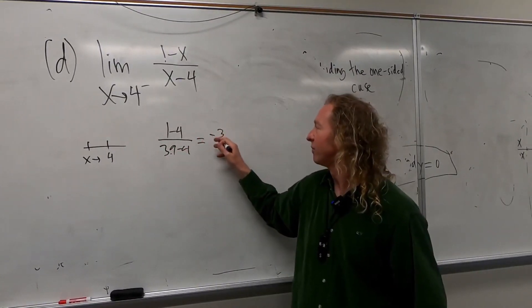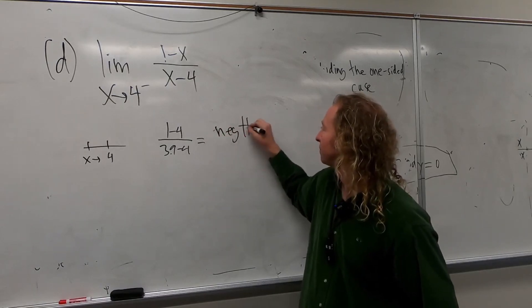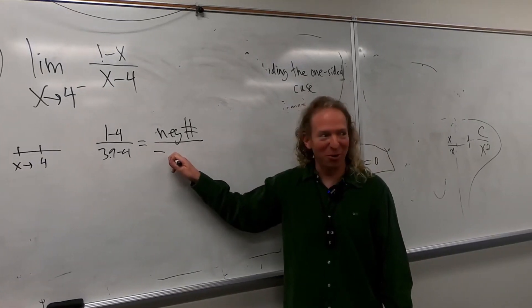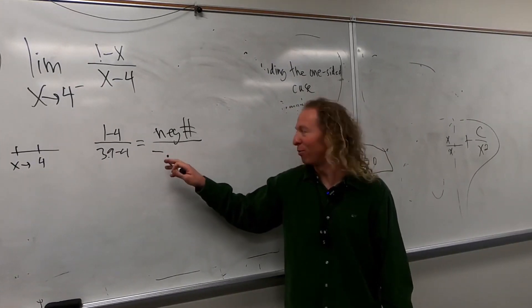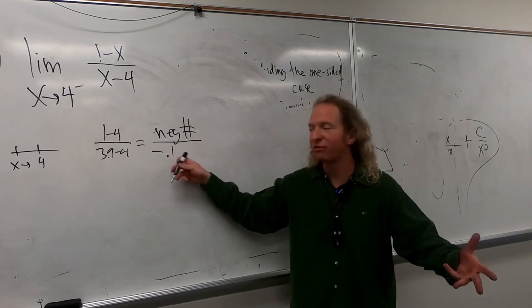It's just so bad. Negative 3. So I'm just going to put negative number. And then on the bottom, it's going to be negative 0.1. Didn't mess up that time. Negative 0.1. Oh, negative and negative becomes positive.